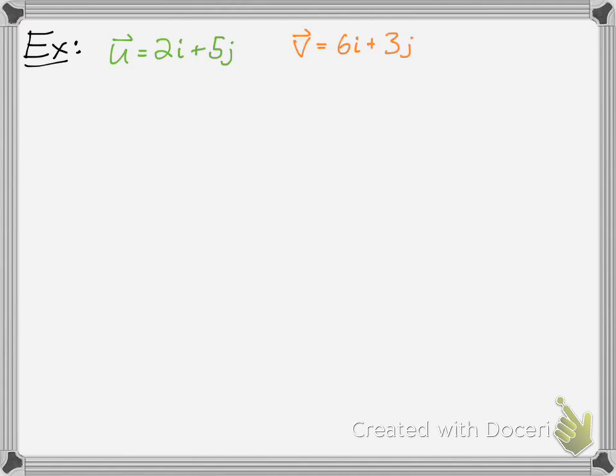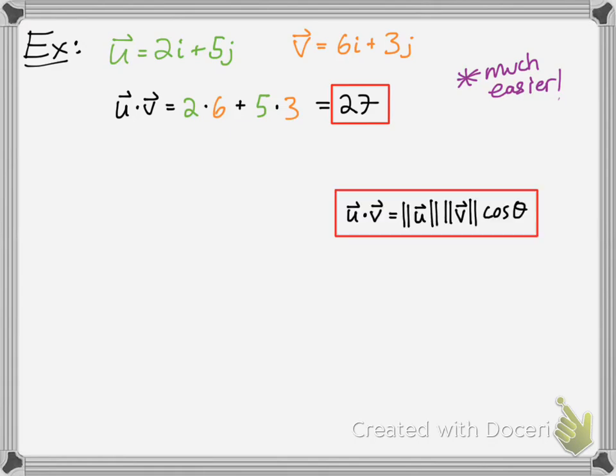Let's jump into using this example here. Using the shortcut method, you would have 2 times 6 plus 5 times 3. Add those up, and you get 27 as your product. This is much easier than figuring out what the angle is, and it will save you a lot of time, probably for an exam.